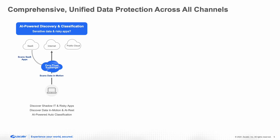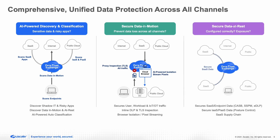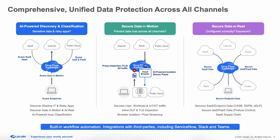The Zscaler Data Protection Platform is a comprehensive platform that looks through multiple channels, both for data in motion as well as data at REST. We focus on five channels: data in line, data sitting at REST in SaaS and public cloud applications, data sitting at REST at endpoint and getting transferred to endpoint devices such as printers and USBs, email DLP, as well as DSPM and data security posture management.